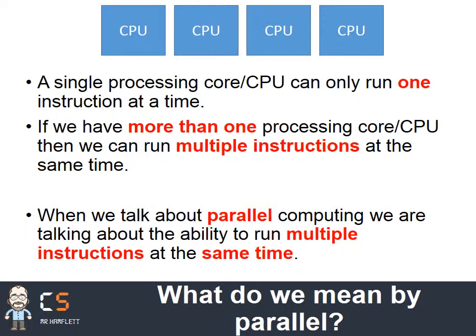But if I have more of them — so if I have lots of CPUs, in this case four CPUs — I can do four instructions at the same time. Each one of these can run a process separately and they can all run at the same time. So when we talk about parallel computing, what we're really talking about is the ability to run multiple instructions at the same time. That's what we mean by parallel.